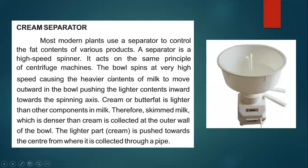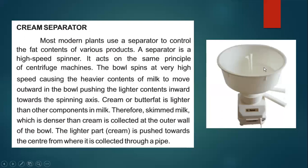The bowl spins at very high speed, causing the heavier contents of milk to move outward in the bowl, pushing the lighter contents inward towards the spinning axis. The heavier components of milk cannot maintain the circular path and move to the sides. The lighter contents, which have enough centripetal force at high speed, stay closer to the center.